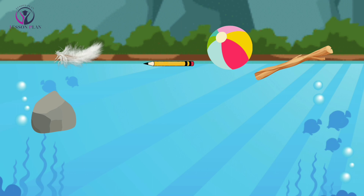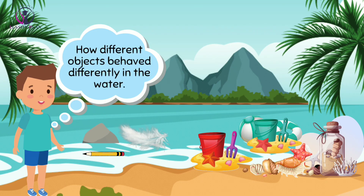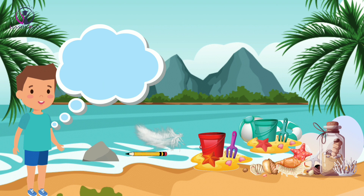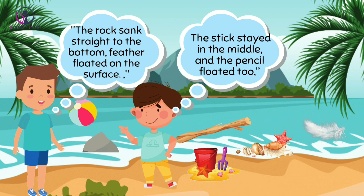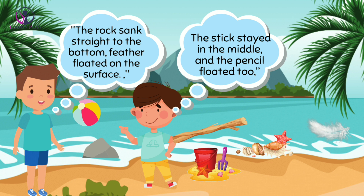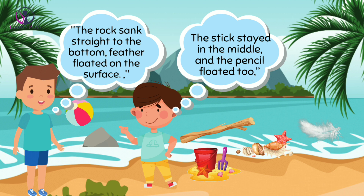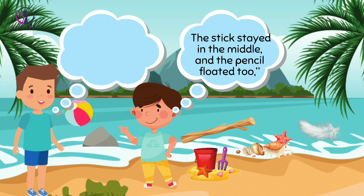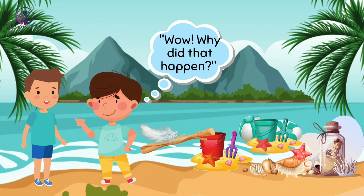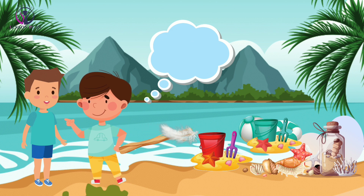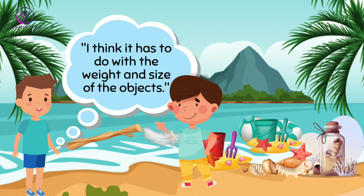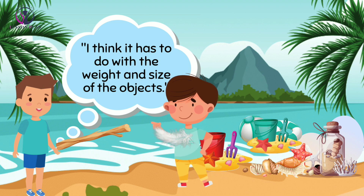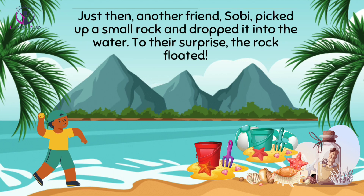Ali was amazed at how different objects behaved differently in the water. Ali explained to his friends what he observed. One of his friends asked why that happened, and Ali thought for a moment before responding: "I think it has to do with the weight and size of the objects."